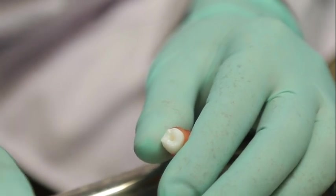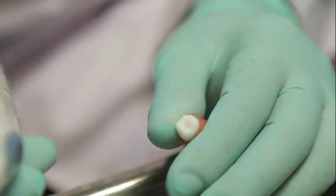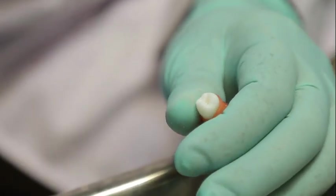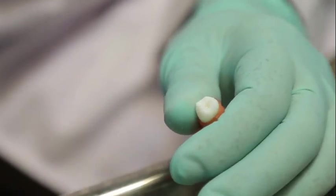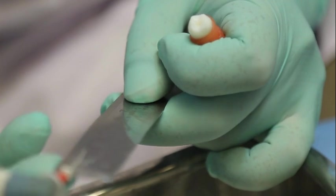Another technique for activating the irrigant is using an endo activator. Various types of tips are available but most of the cases you can use the red tip. You can activate the irrigant just 1mm short of the working length.